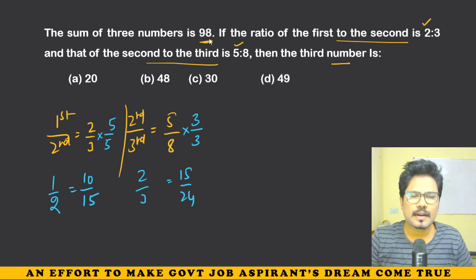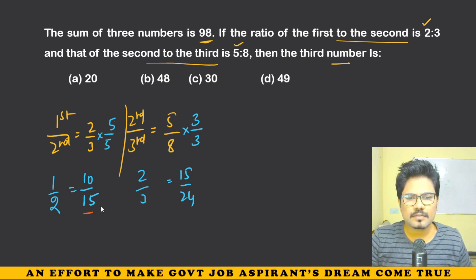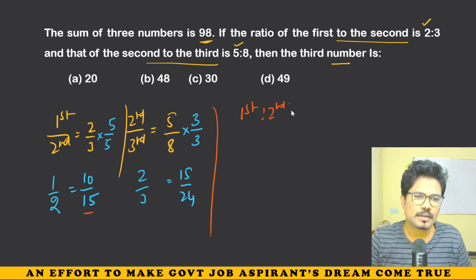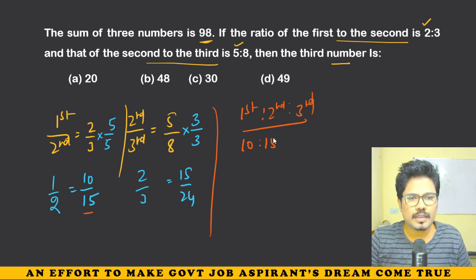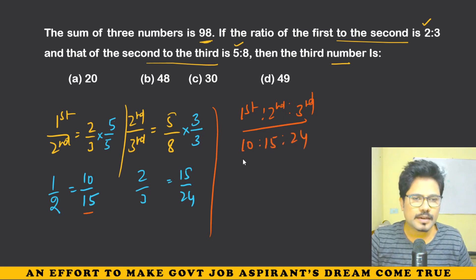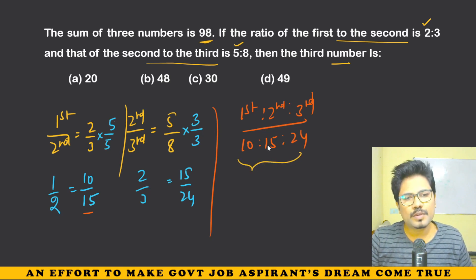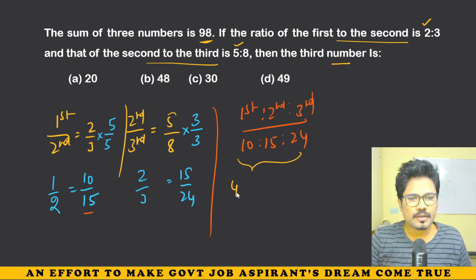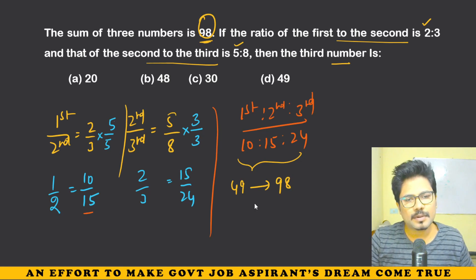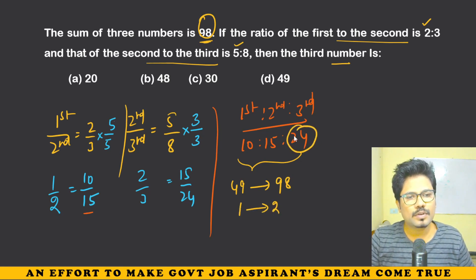So the combined ratio of first:second:third is 10:15:24. Together the units are 10 + 15 + 24 = 49 units. But wait — the total is 49 units equal to 98. So 1 unit equals 2. The third number is 24 units, so 24 × 2 = 48. The answer is 48.